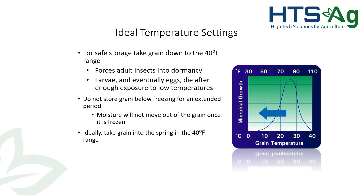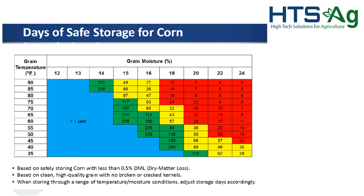How long can we store grain? With corn, we either need it cool or we need it dry. Even at 90 degrees, if we're down at 12 or 13% moisture, we can store it for a really long time. On the other end, at 24% moisture and 90 degrees, you've got about three days. But taking that 24% moisture grain down to 35 degrees takes it from three days to 39 days. And if we can also dry it a few points and get back to 16 or 18% moisture in that 35 to 40 degree range, we've got a really long time that we can store that grain and keep it in good condition.